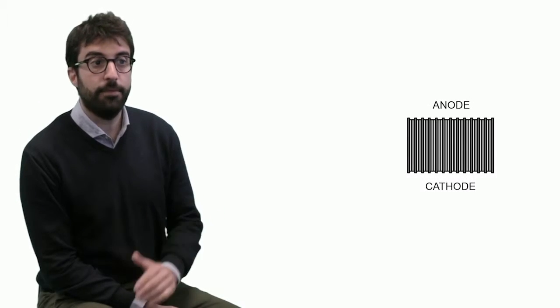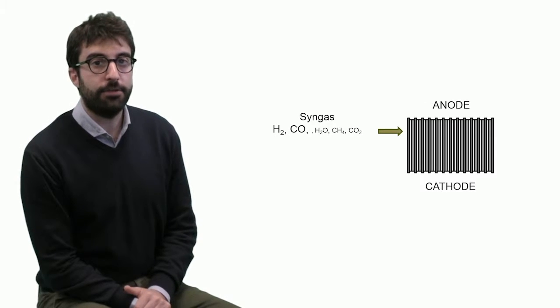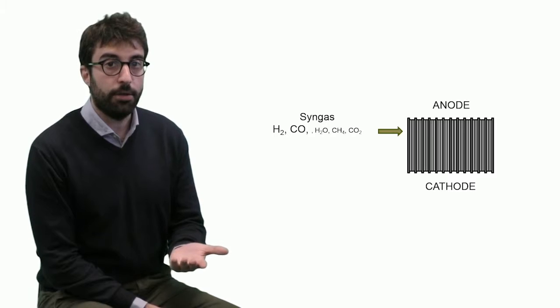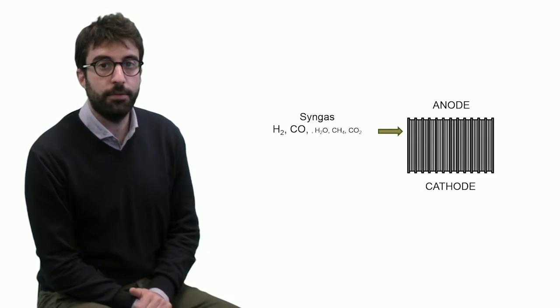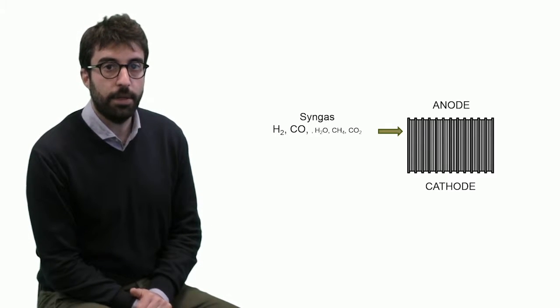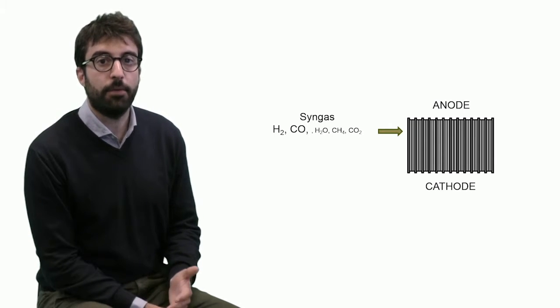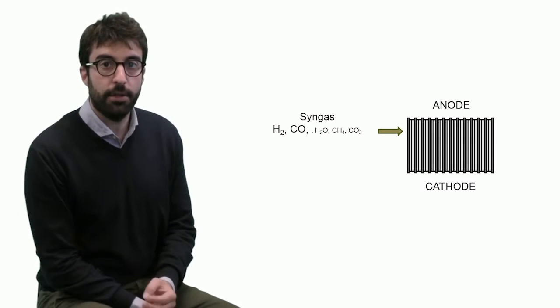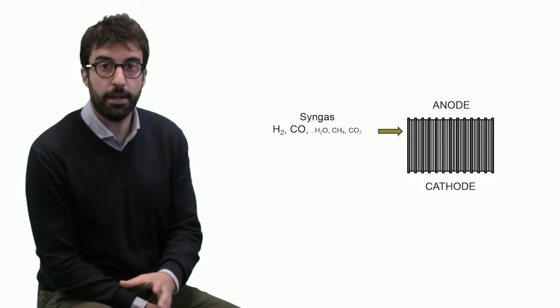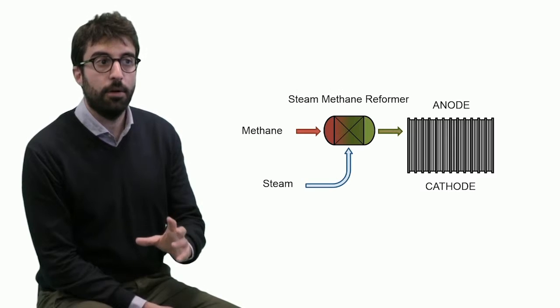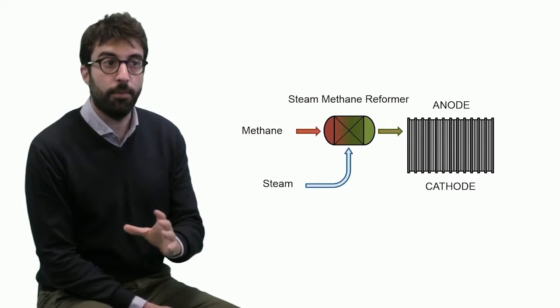Let's start from the stack itself and try to see how to feed the anode with syngas. An option that is most diffused in this kind of system is to feed it with the off-gas of a steam methane reforming, so the same reaction that usually occurs inside the stack can be enhanced in a specific reactor designed for that, what is called a steam methane reformer.